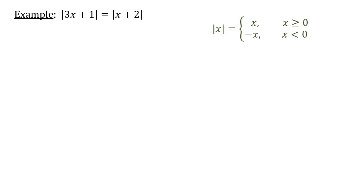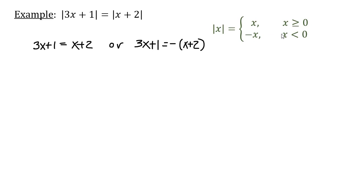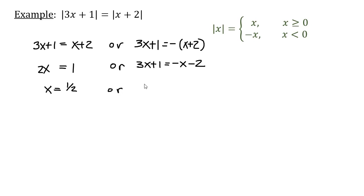What if we have an example like the absolute value of 3x plus 1 equals the absolute value of x plus 2? Here we have to rely on the definition. So I would have 3x plus 1 equals positive x plus 2, or 3x plus 1 equals negative x plus 2. Now I have two equations to solve. Subtracting x from both sides gives 2x equals 1, so x equals one half. Or from the second equation, 4x equals negative 3, so x equals negative three fourths. The solution set is {-3/4, 1/2}.